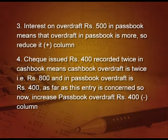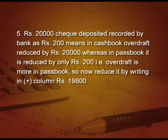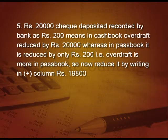Point number 4: check issued 400 recorded twice in cash book means cash book overdraft is 800 whereas in the pass book overdraft is 400 as far as this entry is concerned. So increase pass book overdraft by 400 — go to the minus column and write 400. Point number 5: a 2,000 check deposited was recorded by the bank as 200. In the cash book we reduced the overdraft by 2,000, whereas in the pass book we reduced by only 200. So overdraft is more in the pass book — reduce it by 1,800 by writing 1,800 in the plus column.